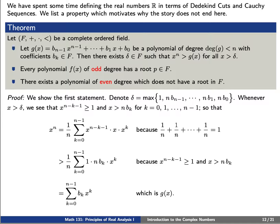Similarly, delta is greater than n times b sub k, so x is greater than n times b sub k, for k being 0, 1, through n minus 1. Using this, we will cleverly write x to the n as a sum over x to the n minus k minus 1 times x times x to the k.